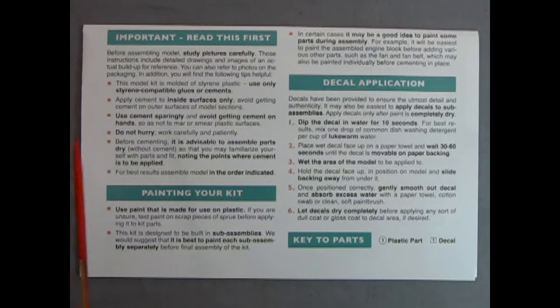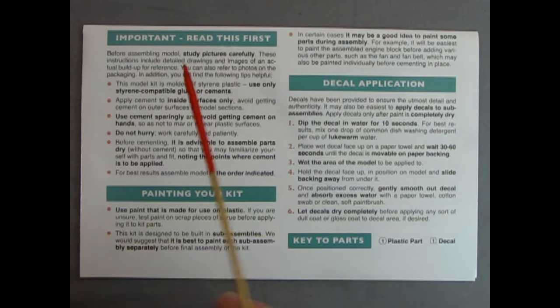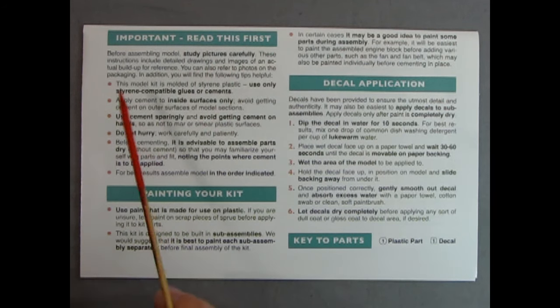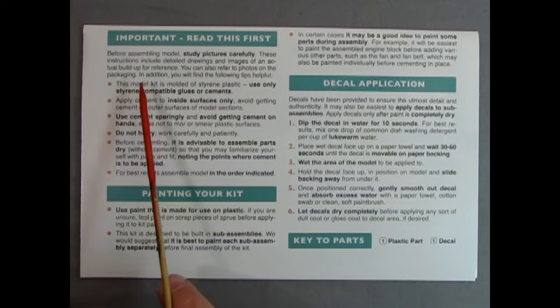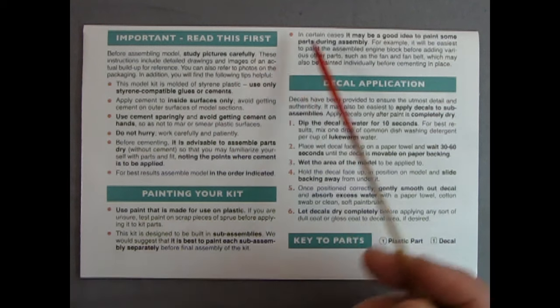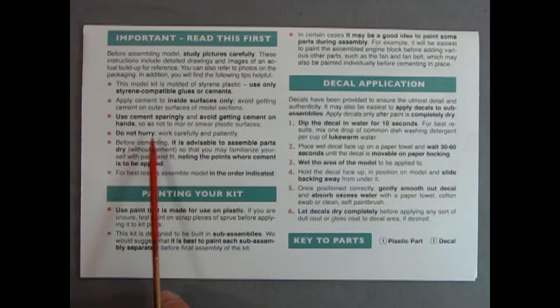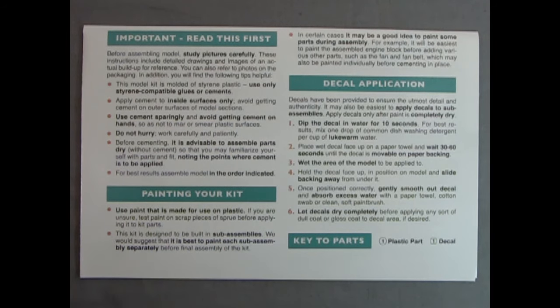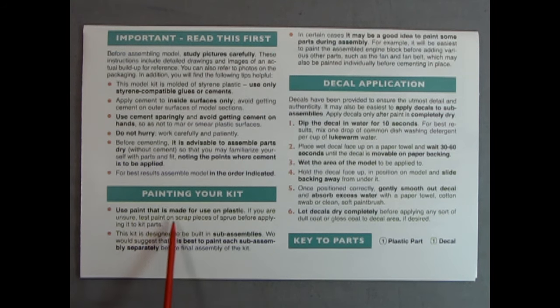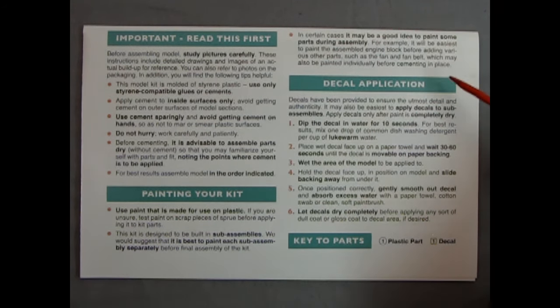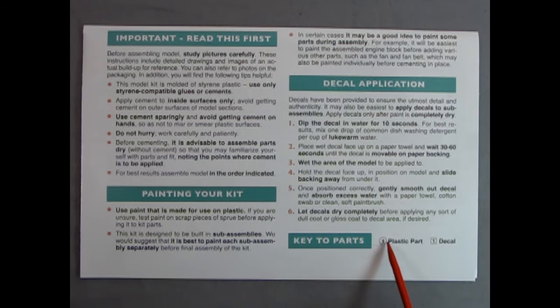On the lower half of the instruction sheet, we have these little boxes here. Important. Read this first. Before assembling the model, study pictures carefully. These instructions include detailed drawings and images of an actual built up for reference. You can also refer to photos on the packaging. In addition, you will find the following tips helpful. Do not hurry, work carefully and patiently. That is a key. Try not to build this model over dinner. Take your time and build it properly. Allow your paints to dry. Use paint that is made for use on plastic. Try to avoid your lacquers. Decal application and the keys to the parts. A circle with a number is a plastic part. Square with a number is a decal.